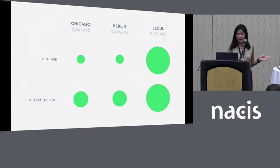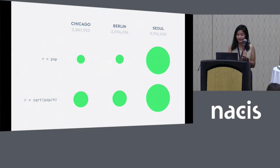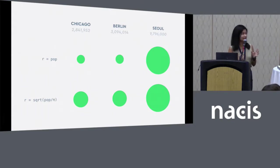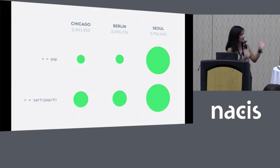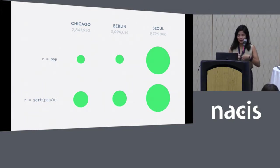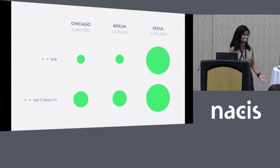On the bottom, I'm using the formula for circle area — pi r squared — and then isolating radius in order to size the circle by population. So we have radius as the square root of population divided by pi. That's just the circle area formula, sort of inside out.